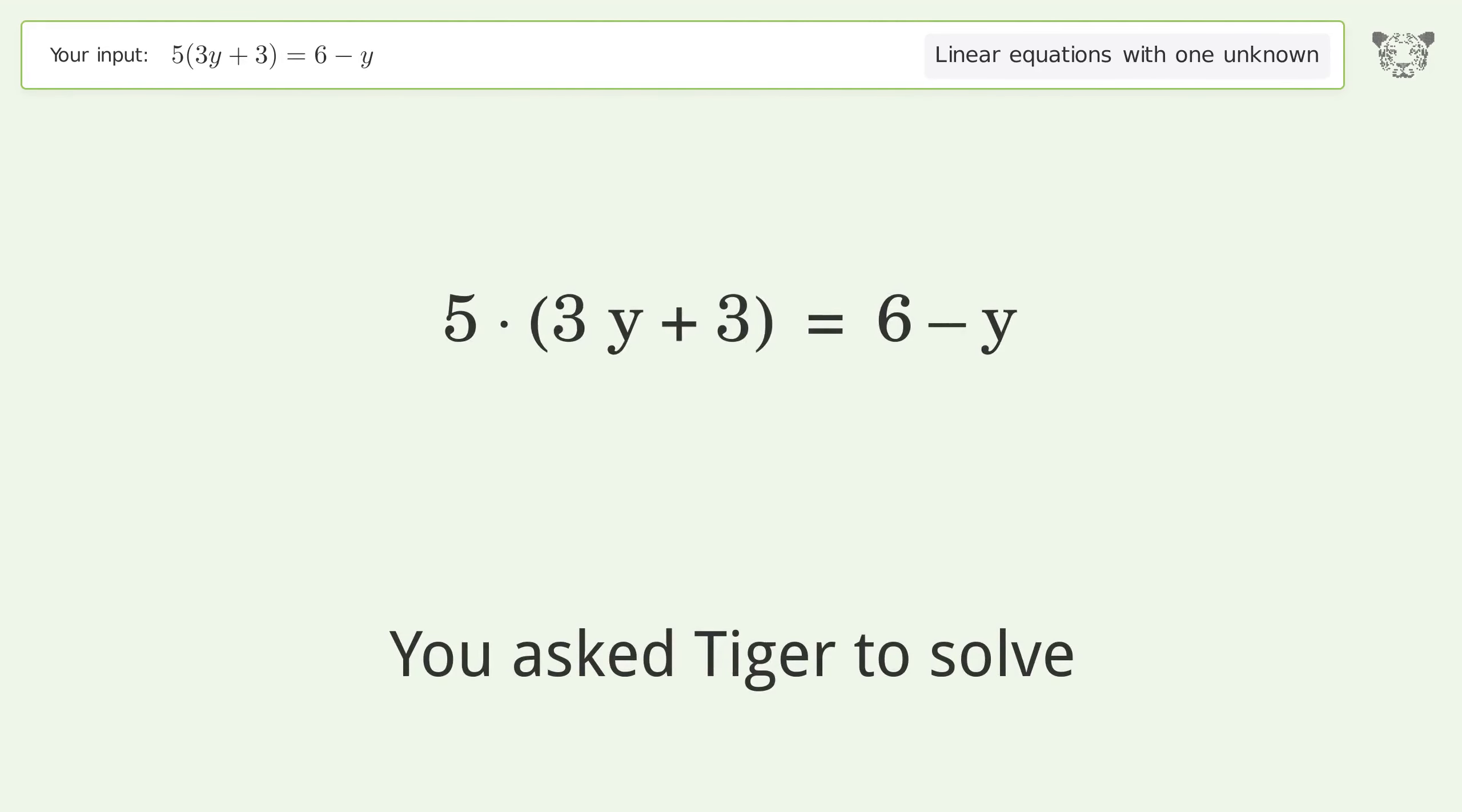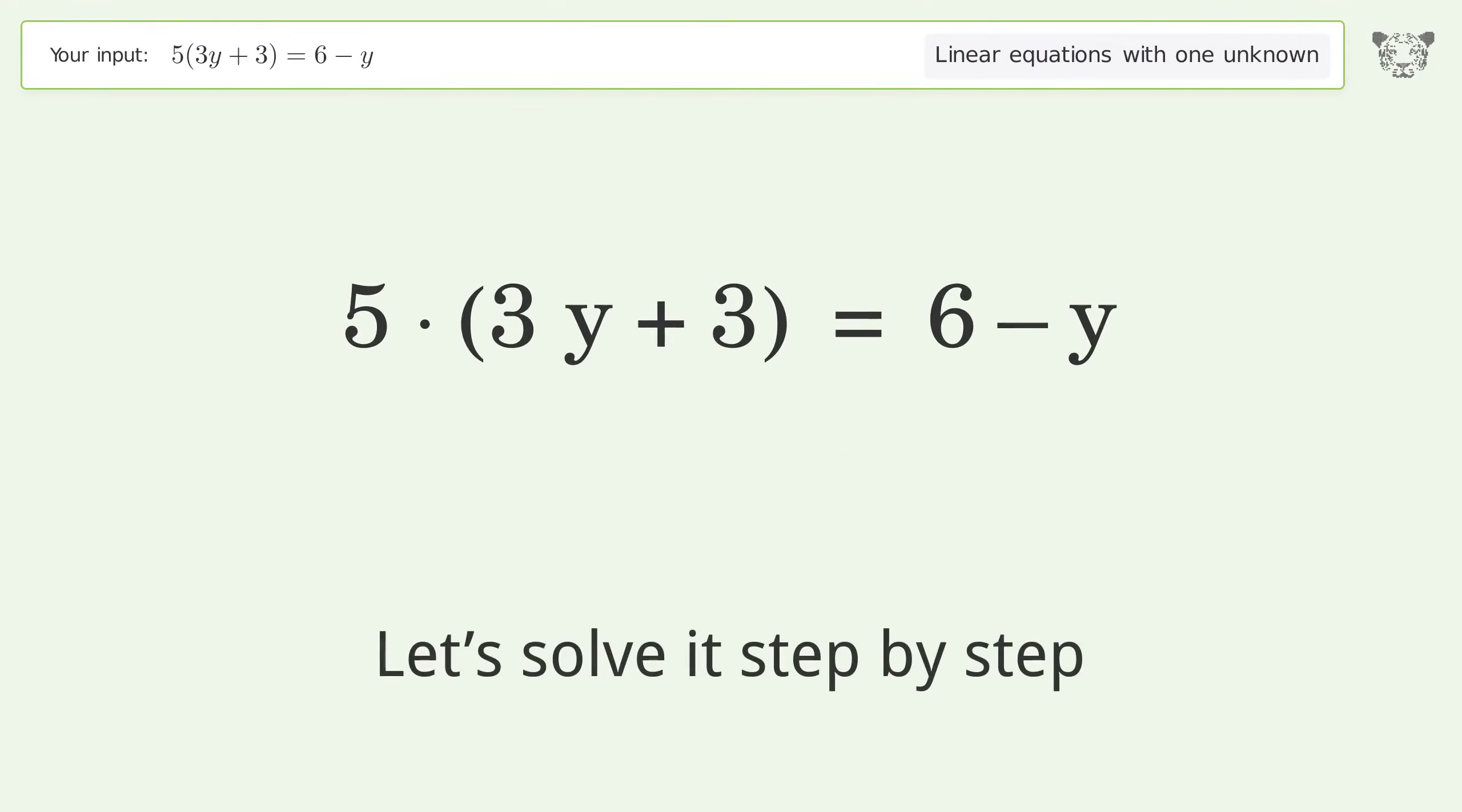You asked Tiger to solve this. It deals with linear equations with one unknown. The final result is y equals negative 9 over 16. Let's solve it step by step.